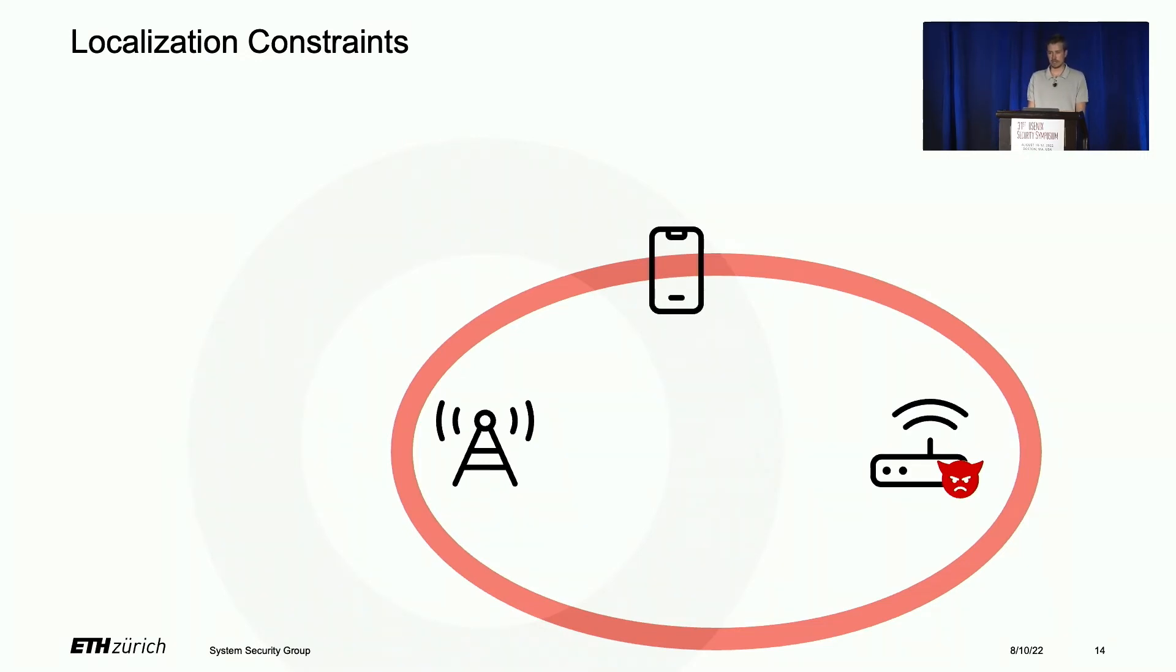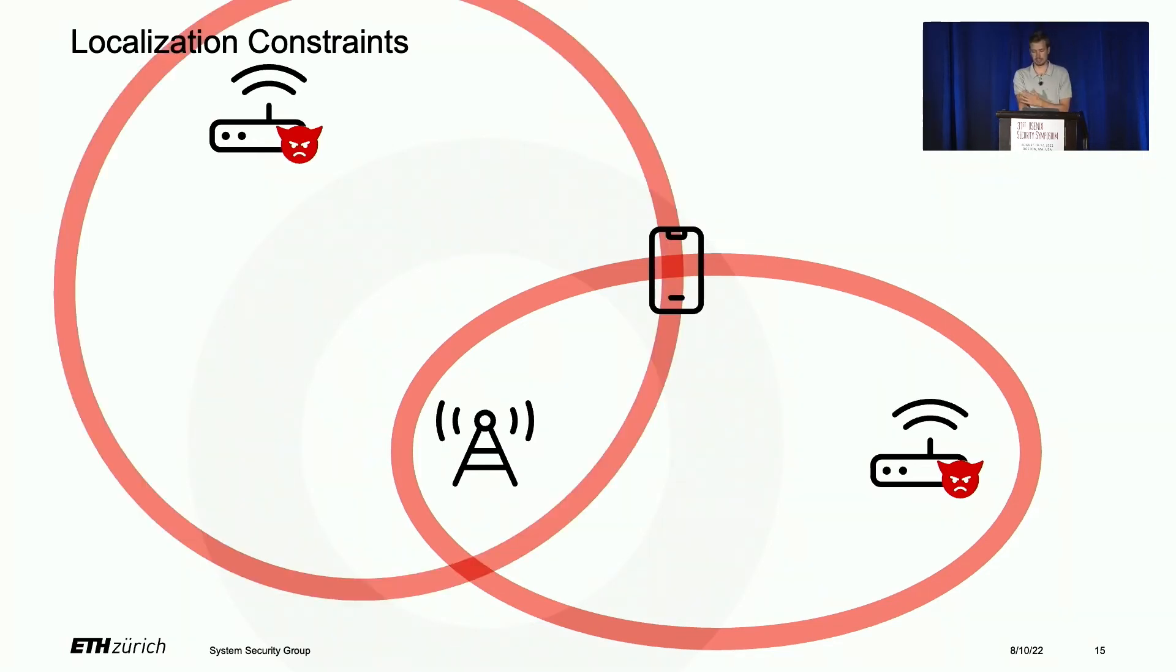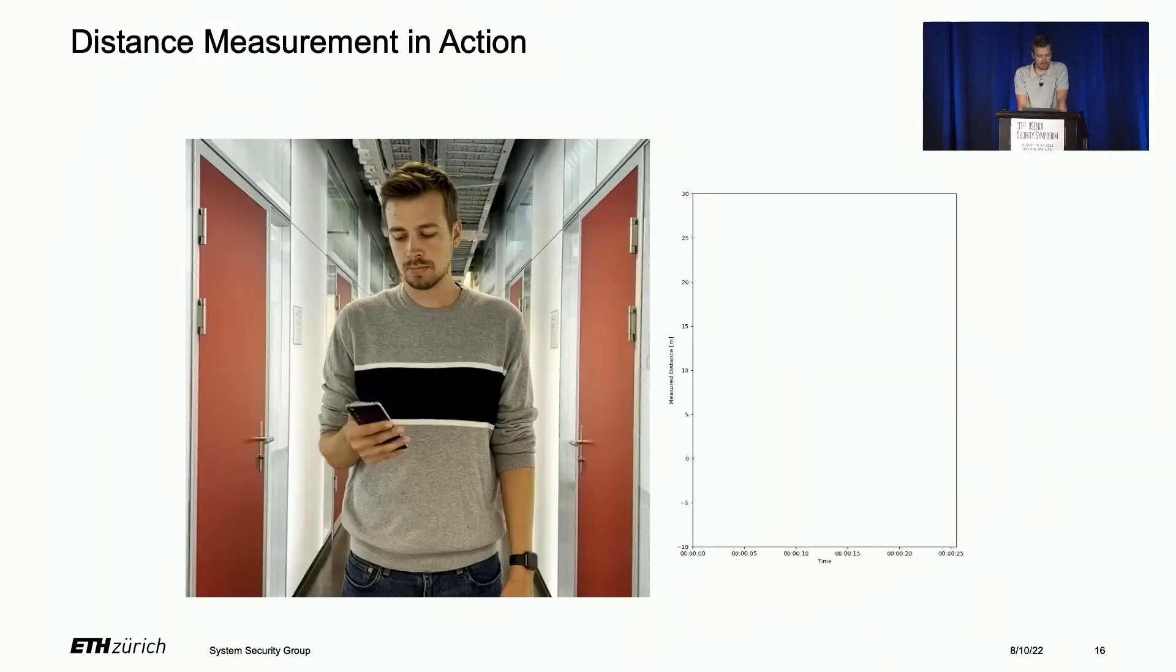Essentially, we can get the location at the intersection of this wide ring and the ellipse using just one attacking device. This is because we're using the base station as an attacking device as well. Obviously, we can get even better accuracy using additional sniffers, but this is not necessary.